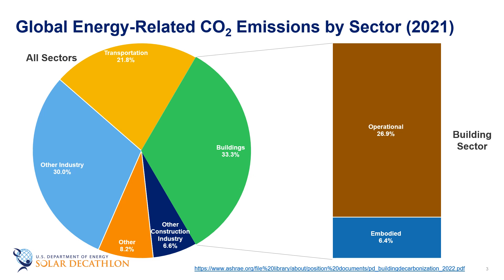One thing to consider: we've spent a lot of time talking about zero energy buildings. As buildings become more efficient, the percentage of embodied emissions compared to the total emissions of the building increases. So if you have a building that uses all carbon-free energy, then the operational emissions are close to zero and the carbon footprint is all about the embodied emissions.